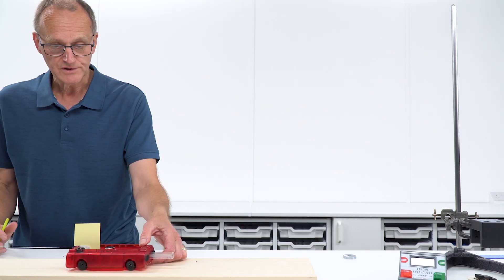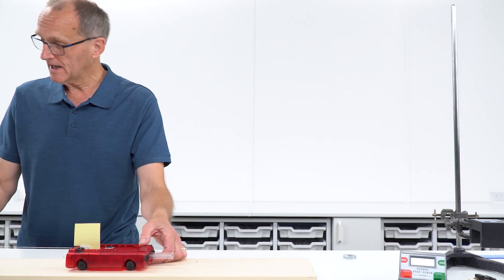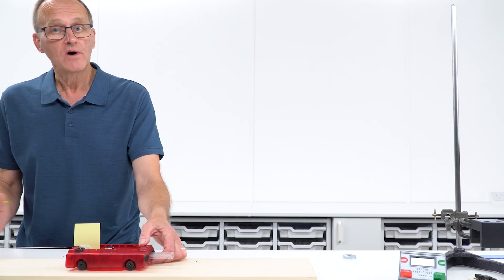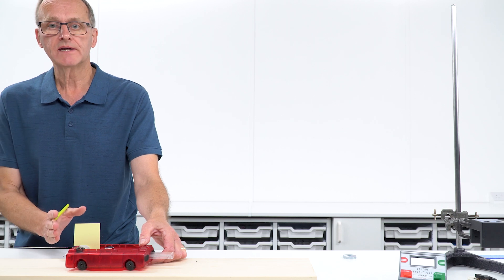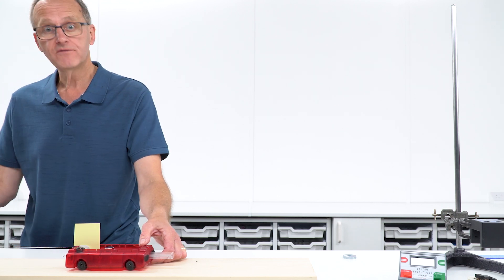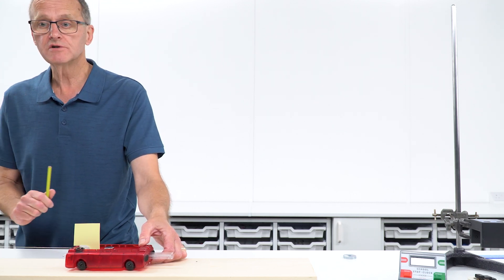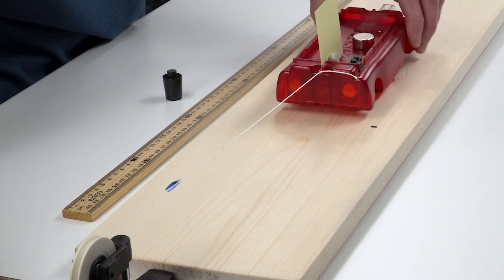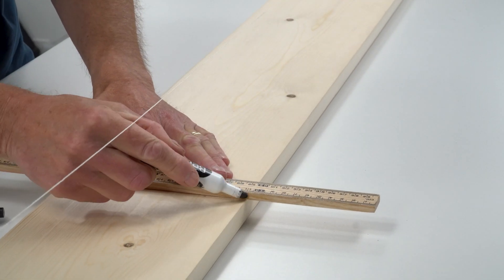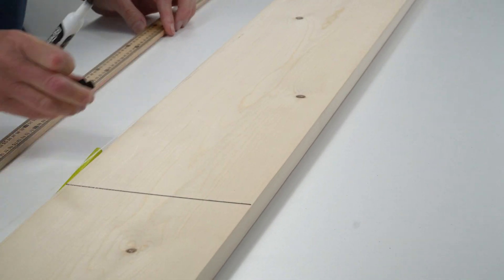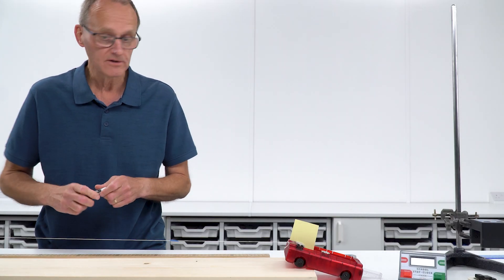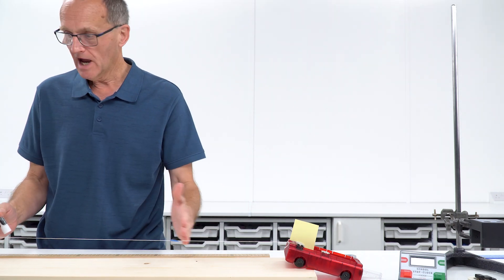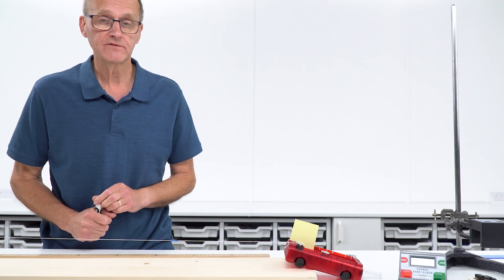The trolley will only be accelerating for as long as the masses are actually falling, so any measurements we want to make have to be completed before the masses hit the floor. One way to ensure this is to make a mark on the ramp to show the point where the masses will hit, so that sensors or light gates are placed on the near side of that line.